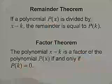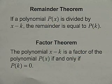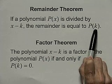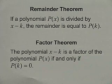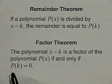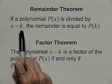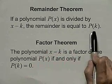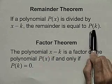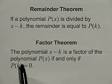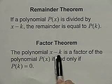Now we use synthetic division with the following two theorems. The first is the remainder theorem, which says if a polynomial p of x is divided by x minus k, the remainder is equal to p of k — the polynomial evaluated at k. The factor theorem says x minus k is a factor of p of x if and only if p of k equals 0. Notice that if x minus k divides p of x, the remainder is p of k, which means the remainder is 0 if and only if x minus k is a factor.